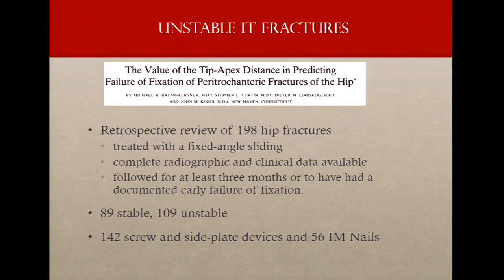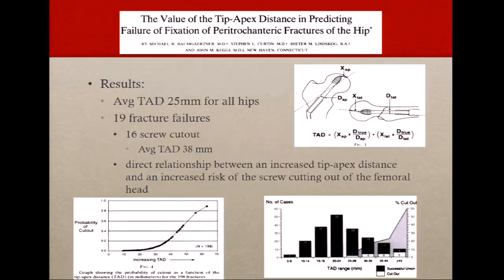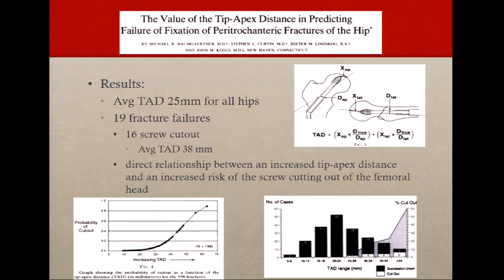This is the historic article that everybody talks about with the tip apex. It's come into some debate, but I think it's a good goal to keep in mind when fixing fragility fractures or unstable intertroch fractures. You want your tip apex to be within 25. The screw cutouts in this study were occurring at 38. The tip apex is the center of the head on AP and lateral views, additive, and you want it within 25 in general. More so, I think it dictates that you've got a good reduction if you're able to get it in the center of the head — if you're not, you're most likely mal-reduced and giving yourself a higher chance of failure.